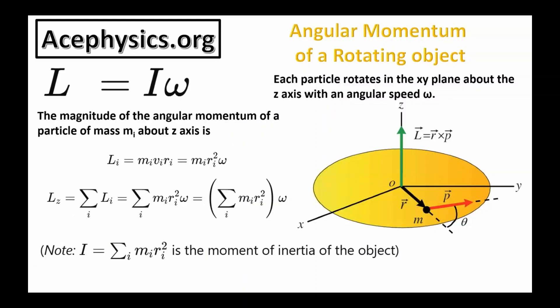Now I want to discuss how to calculate the angular momentum of an extended rotating object. Imagine this is a disk rotating about its center of mass. To calculate the angular momentum of the entire disk, we break it up into many small mass elements, calculate the angular momentum of each mass, and sum them all up. The angular momentum of a given mass element is its linear momentum MV multiplied by its radius.